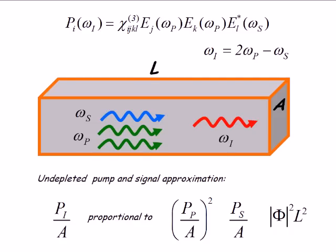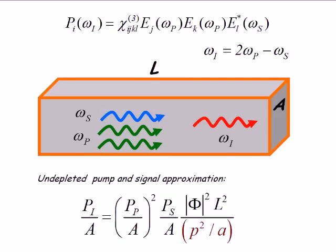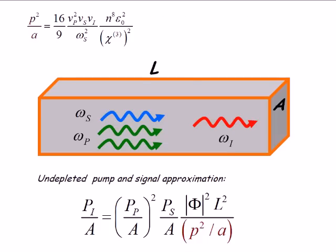What's left - well, dimensions tell you what's left has to have units of power squared divided by area, just to make the dimensions work. When you actually do the theory, you find that's what this term is. It has to do with material properties, group velocities, frequencies, and the χ³.